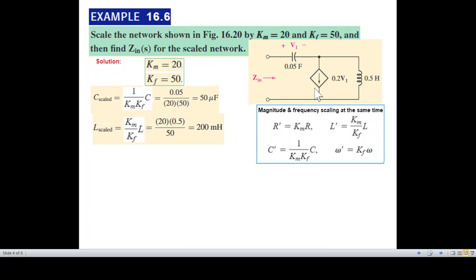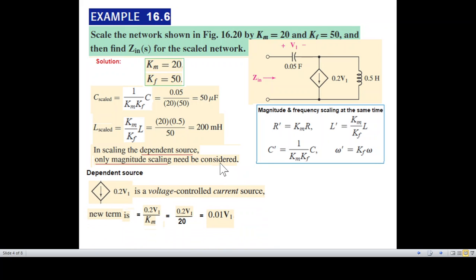But now there's a problem with the dependent source. There is a dependent source in the circuit, and scaling the dependent source, only magnitude scaling needs to be considered. And that too it is not multiplication, rather it is division. So if the voltage was 0.2V1, then the new value will be 0.2V1 divided by the Km factor which is 20, that will be 0.01 volt. Keep this in mind for the controlled sources.